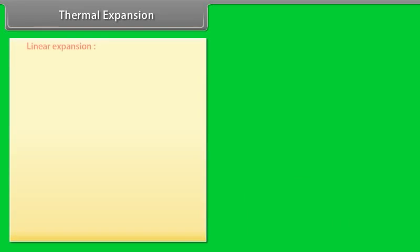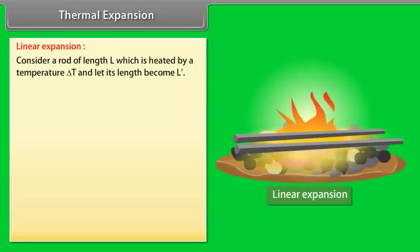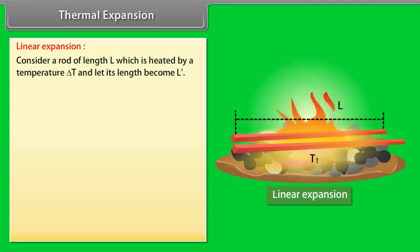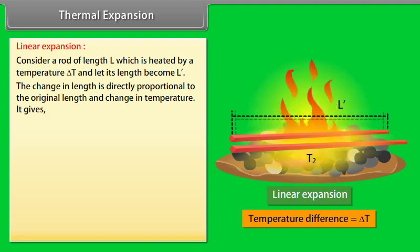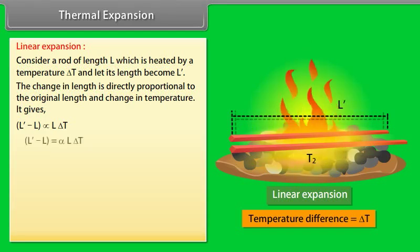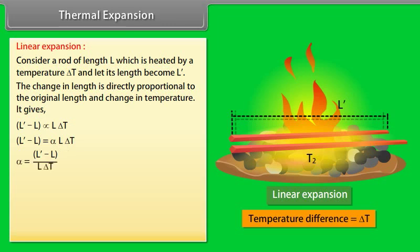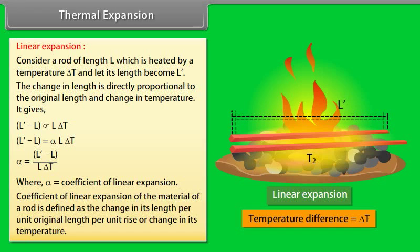Linear expansion: Consider a rod of length L, which is heated by a temperature delta T, and let its length become L dash. The change in length is directly proportional to the original length and change in temperature. It gives: L dash minus L is directly proportional to L delta T, or L dash minus L is equal to alpha L delta T. The value of alpha equals (L dash minus L) upon L delta T, where alpha is the coefficient of linear expansion, defined as the change in length per unit original length per unit rise in temperature.